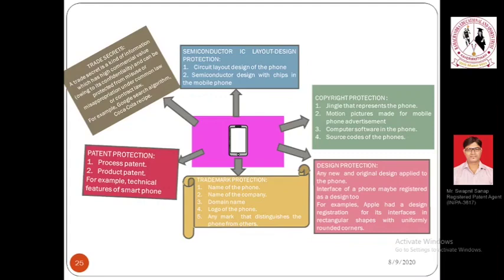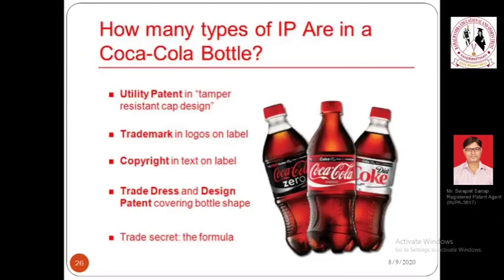Another example showing a single product with multiple IPRs: utility patent is filed for the tamper-resistant cap and design of the Coca-Cola bottle, whereas trademark is for the name 'Coca-Cola,' 'Diet Coke,' etc., helping identify the product as belonging to the original company and not a fake company. This reminds me: you must have seen Parley-G biscuits. In rural areas, the name becomes 'Parley-E' — people copy the aesthetics of the packaging, put a different product inside, and try to disguise consumers.